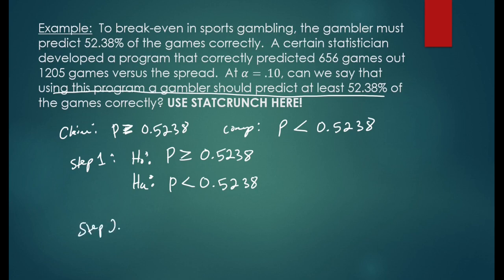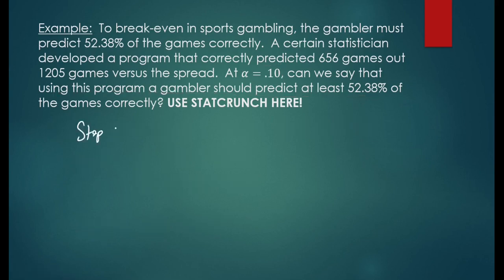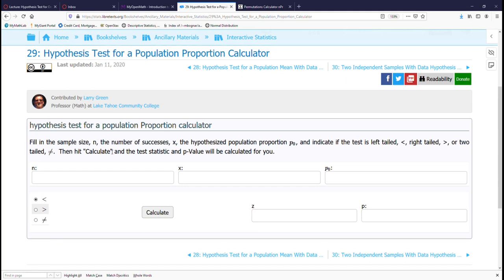Step two, state alpha. Alpha is 0.10. Step three, we are going to state our test statistic. Let's try the question now on the computer and let's crunch the numbers.